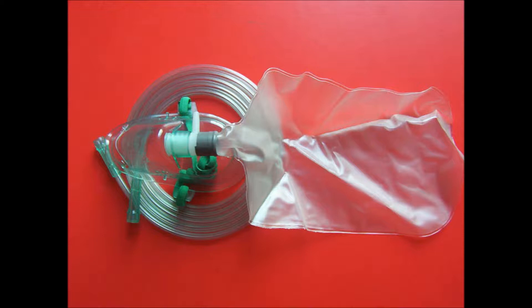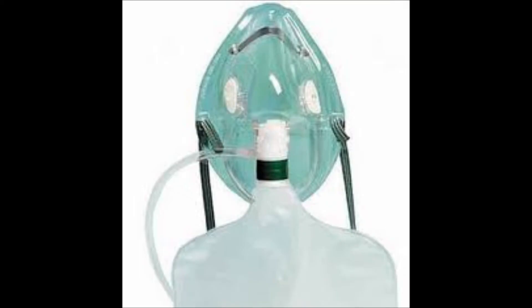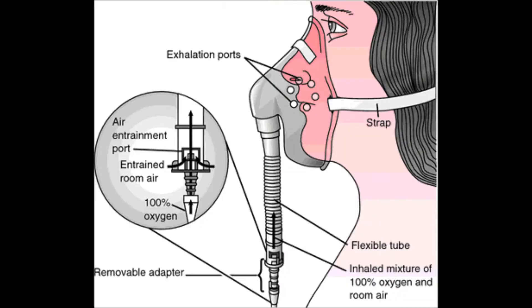The answer is D. A rebreather mask has a reservoir with flaps on the side of the mask that do not open and close with breathing. It delivers less oxygen concentration than a non-rebreather, which has flaps on the mask that close during inhalation and open at exhalation, allowing the patient to breathe almost 100% FIO2. A Venturi mask gives a precise concentration of oxygen. Humidity is given with the mask, and the highest FIO2 without mechanical ventilation is delivered by a non-rebreather.